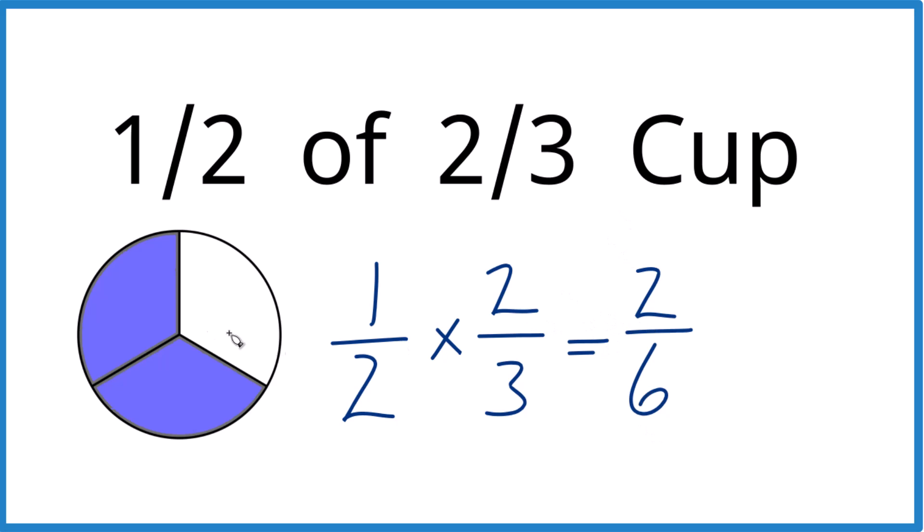That's not what we got before. We said it was one third. Well you can simplify two-sixths because these are both even numbers. So half of two that's one. Half of six that's three. So there's our one-third.